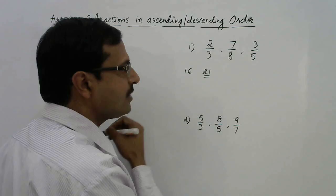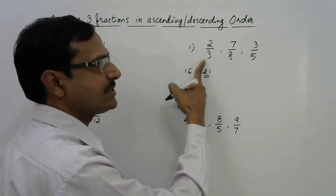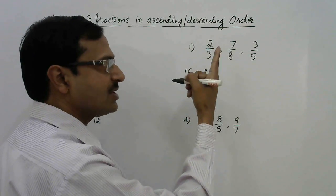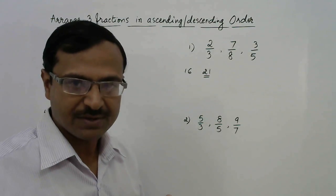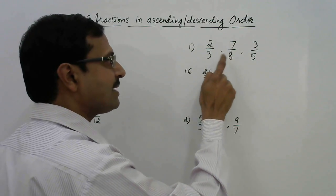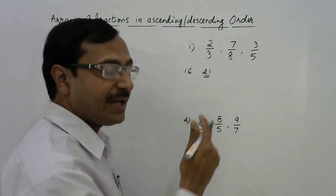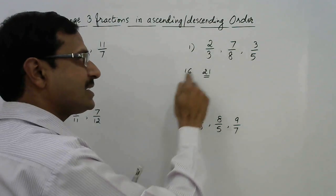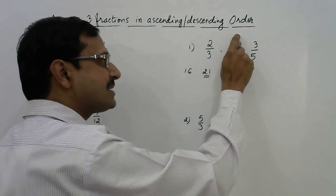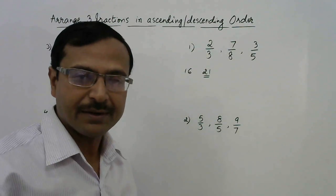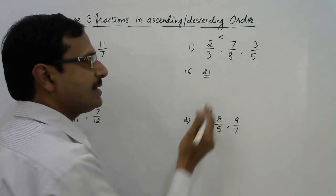21 is obtained by multiplying the numerator of 7/8 with the denominator of 2/3. The rule is: the fraction whose numerator gives the larger product on cross-multiplication is the larger fraction. So 7 × 3 = 21 is greater than 2 × 8 = 16, meaning 7/8 is greater than 2/3.